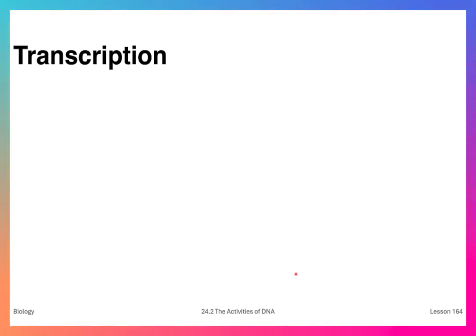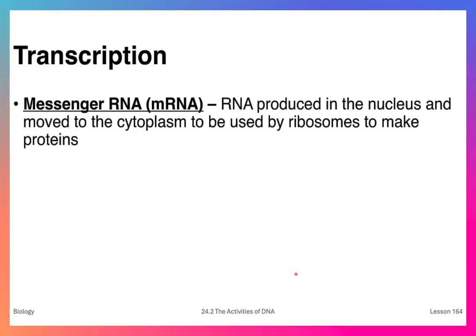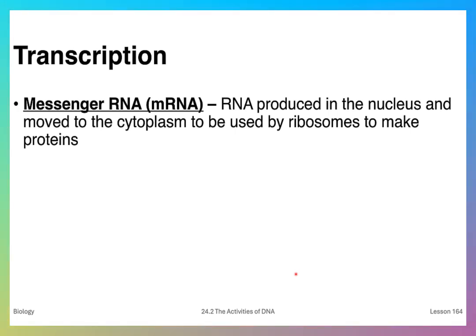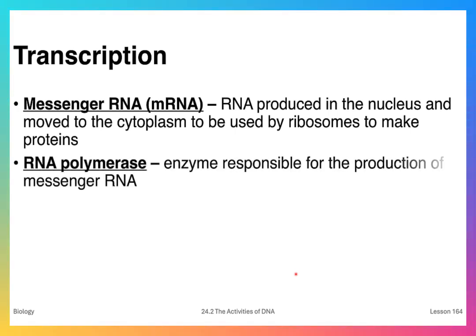We're going to continue this discussion with the next part of the process. We've talked about replication; now we're going to talk about transcription. Transcription is the production of an RNA molecule from a DNA molecule. Messenger RNA is the principal molecule produced during transcription. It is produced in the nucleus and then moves into the cytoplasm to be used by the ribosomes to make proteins, and it is produced by an enzyme known as RNA polymerase.